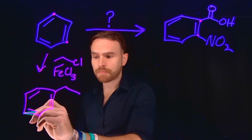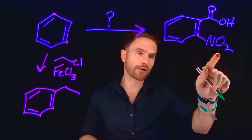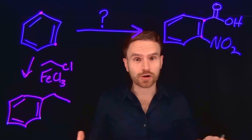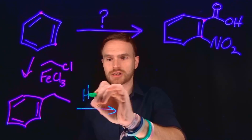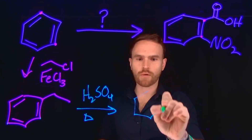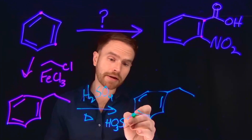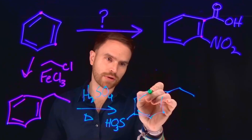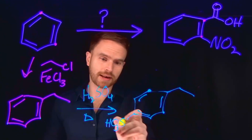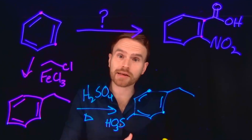So we'll need to block this para position. Importantly, we can't just block it with anything — we need to consider that the next substitution, where we add the nitro group, needs to happen at a specific position and not any other. For that, we can choose an electron withdrawing group like sulfonation, using concentrated sulfuric acid, which adds a meta-directing sulfonate group at that para position. Now both the alkyl chain and the sulfonate are directing the next substitution to the same position, working in tandem to give us our product.